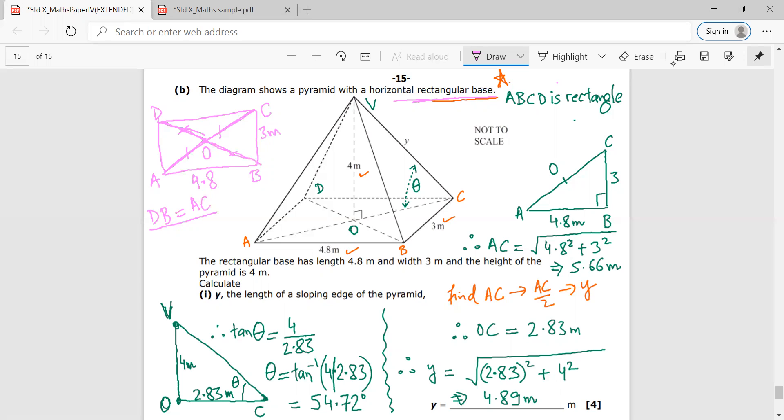the first part of the question is calculate Y, the length of the sloping edge of the pyramid. So I need to find this. Now I will find this in parts. First, what I will do is I will consider triangle ABC, triangle ABC. So this is a triangle. This is a base triangle that I am considering. Any doubt? Awesome.